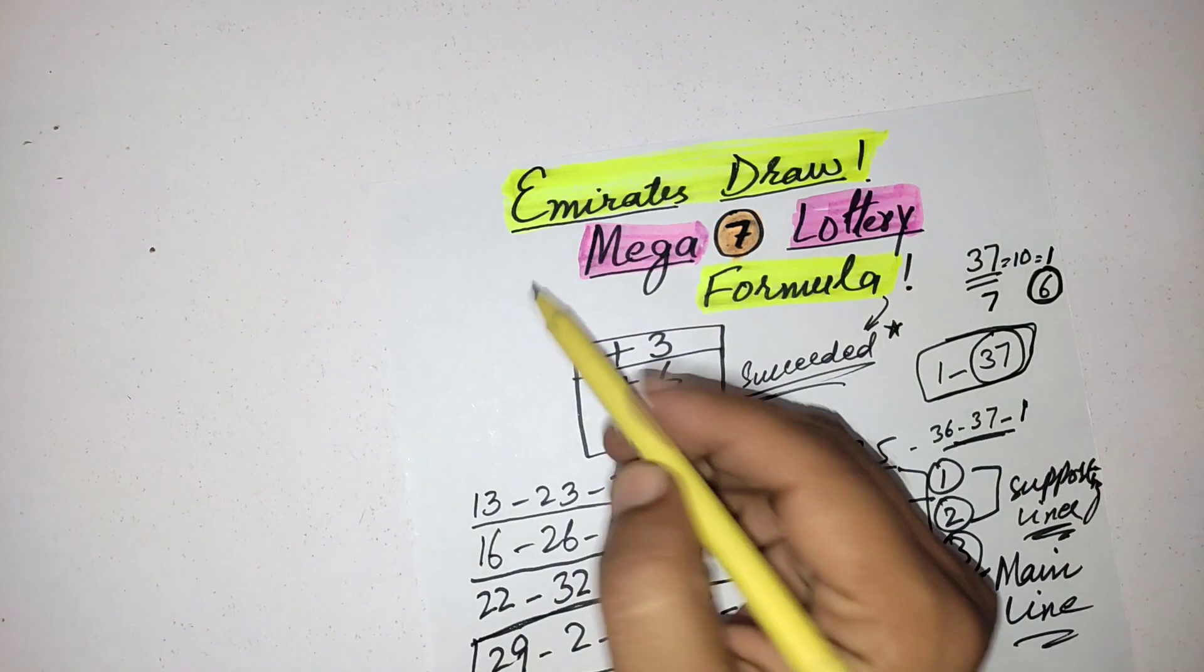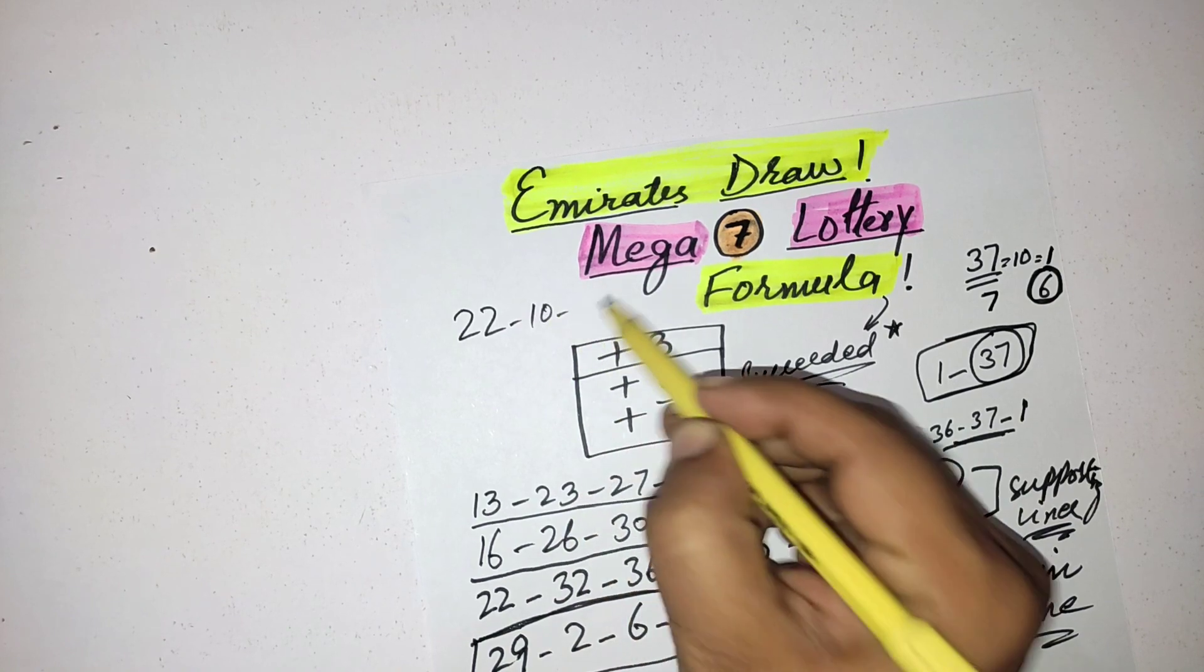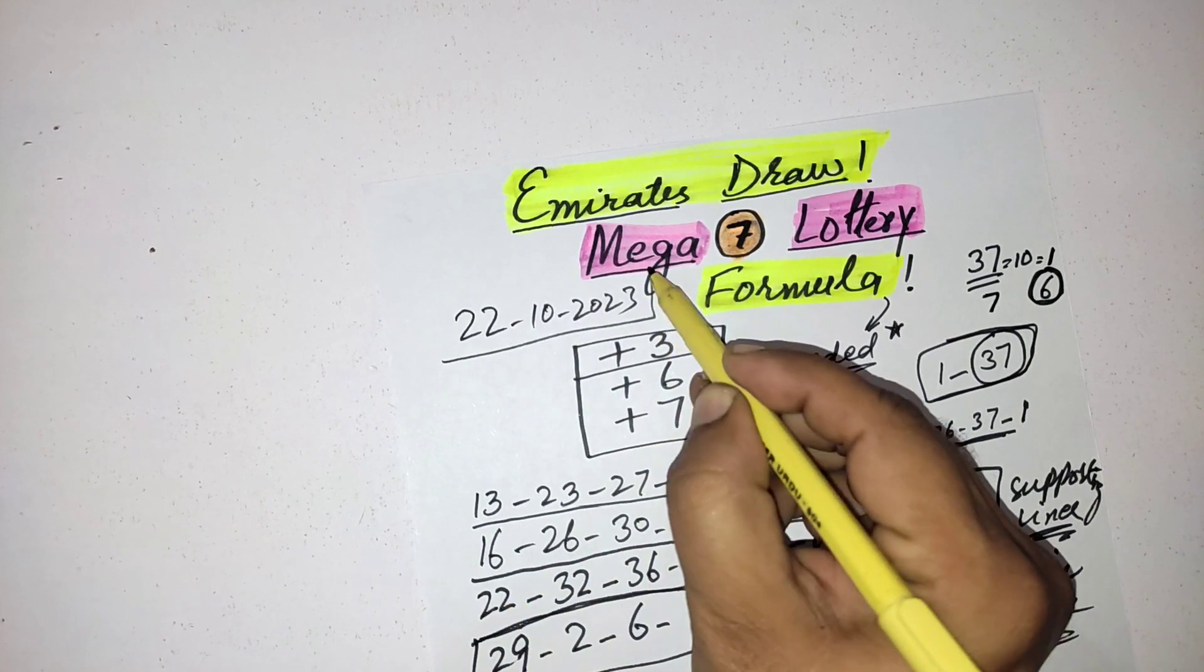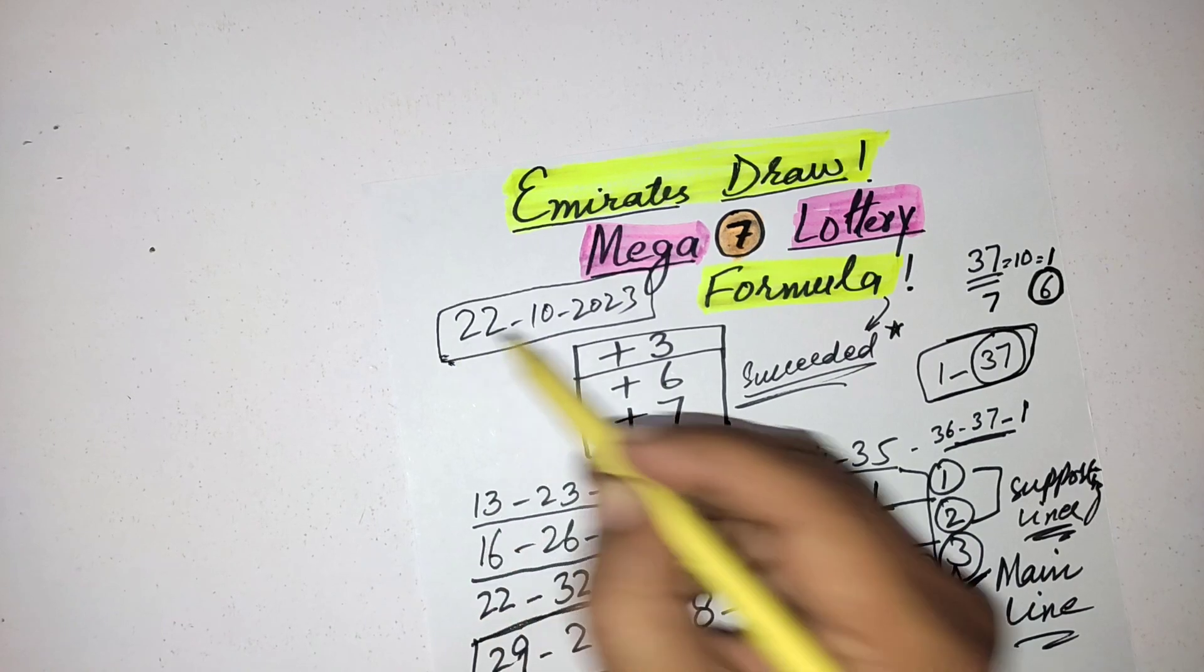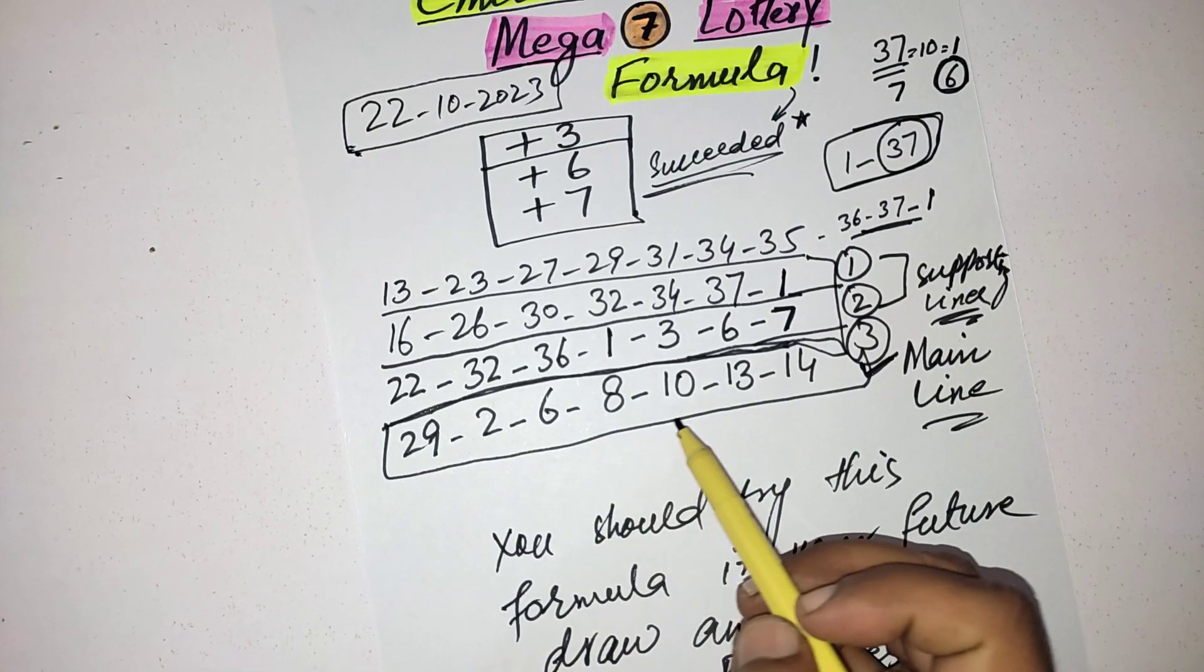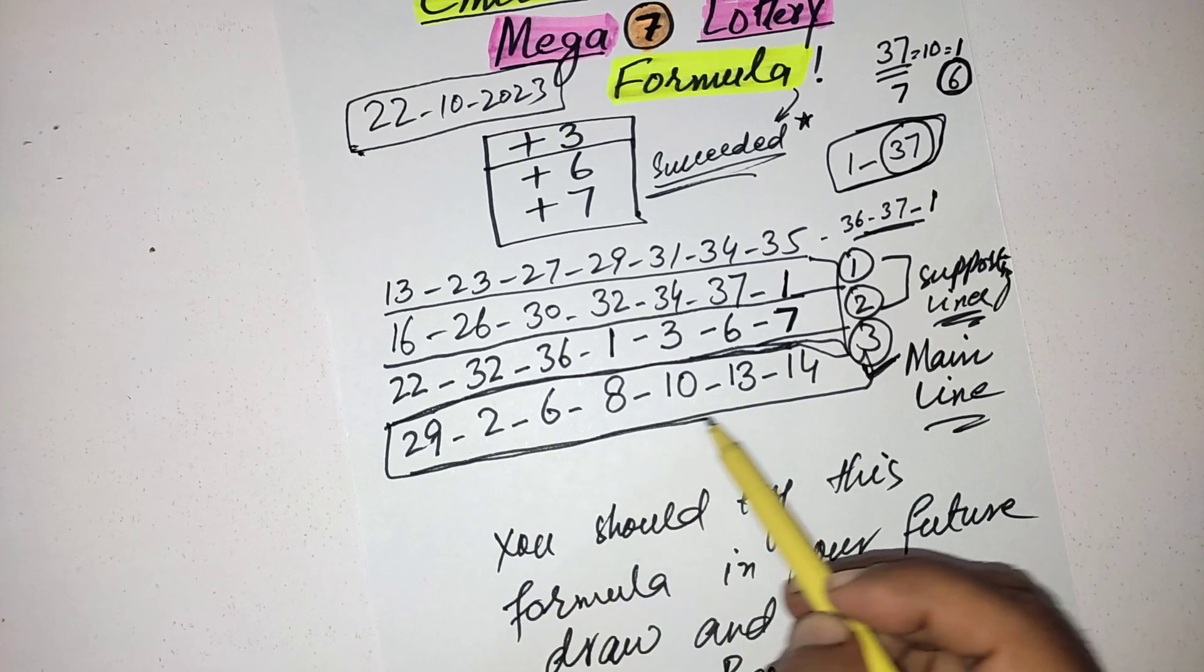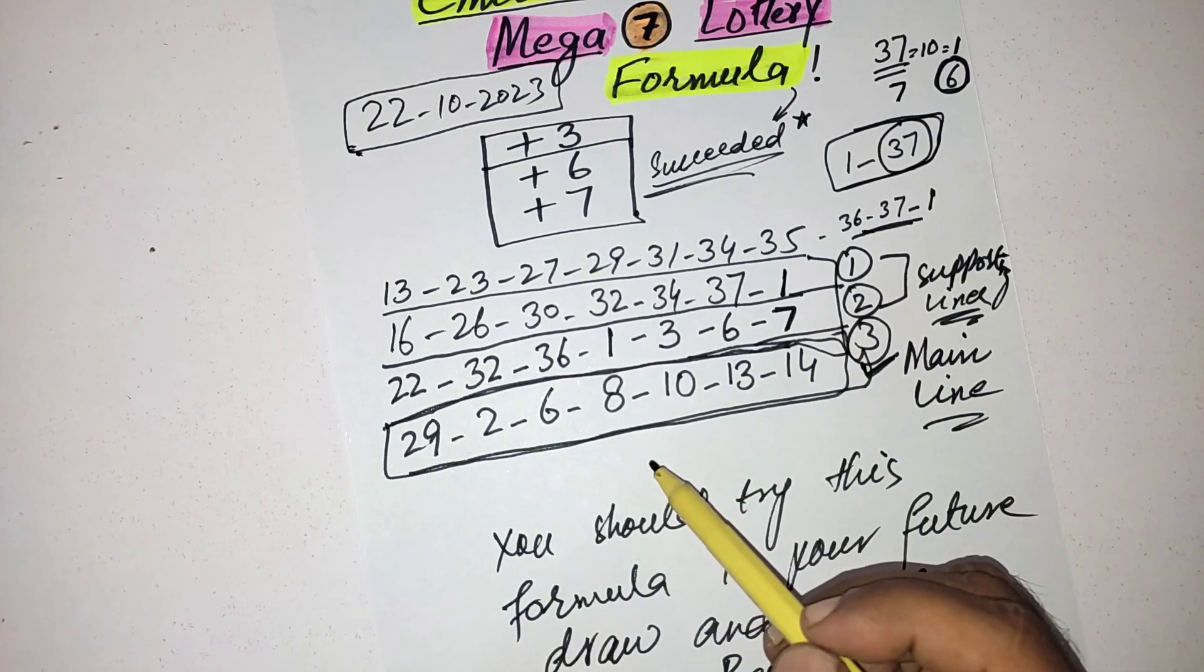The next drawing of this draw is 22 October 2023. This draw you should must select the numbers from the numbers from these line, or you can also buy the same line from these three lines.